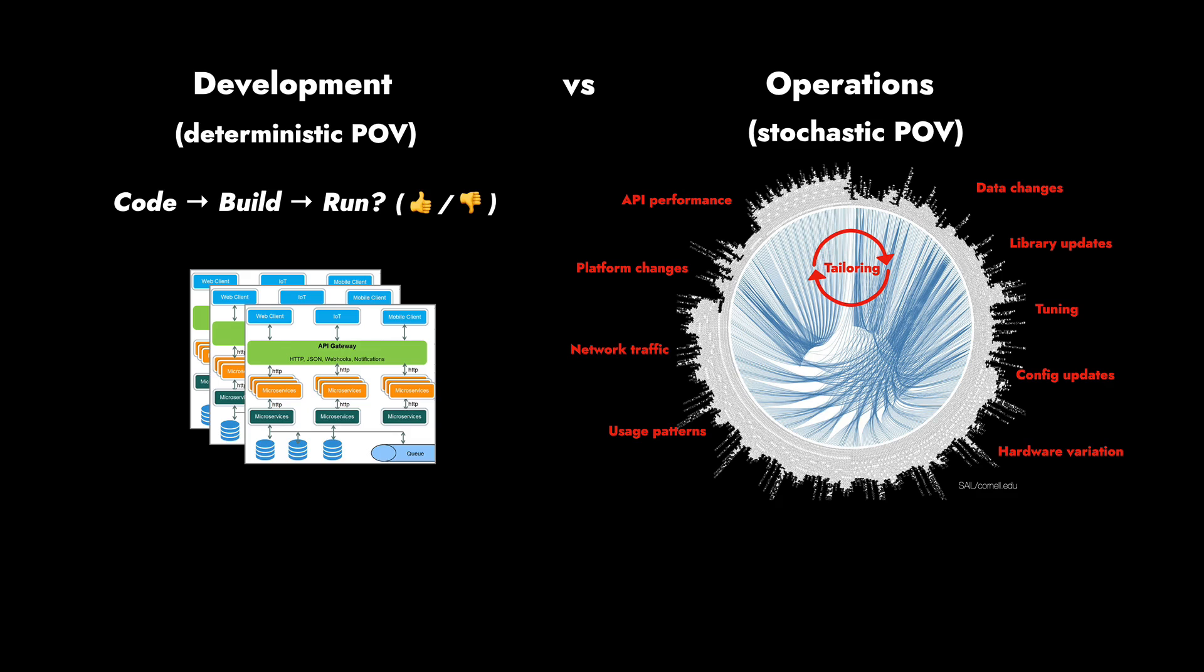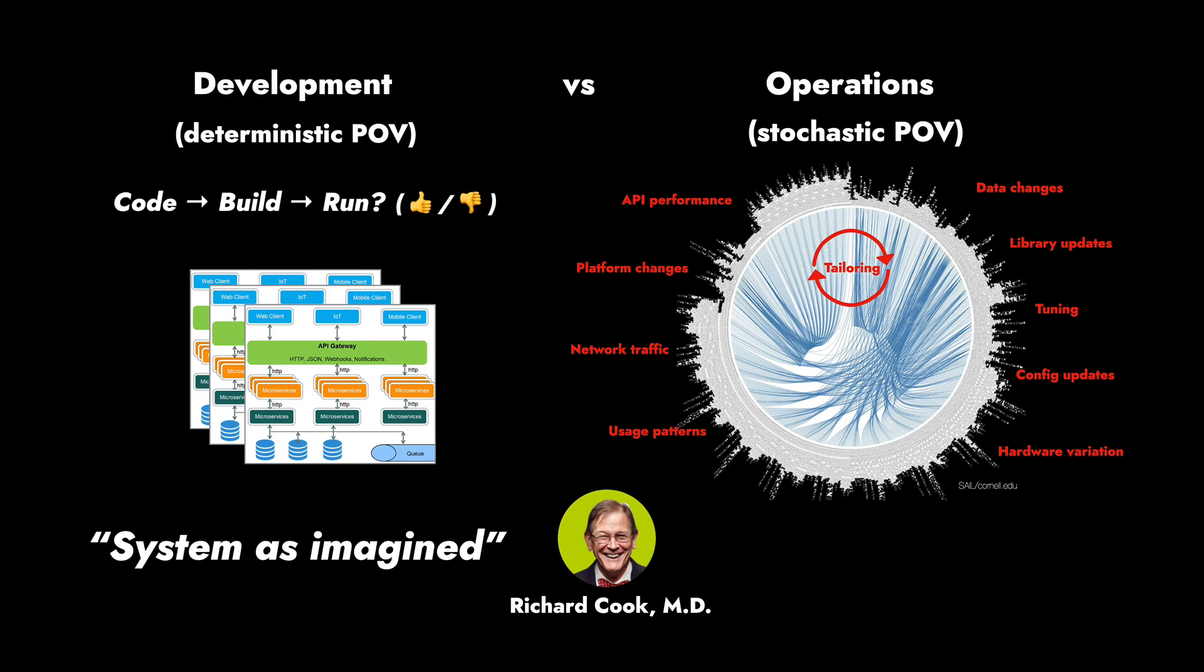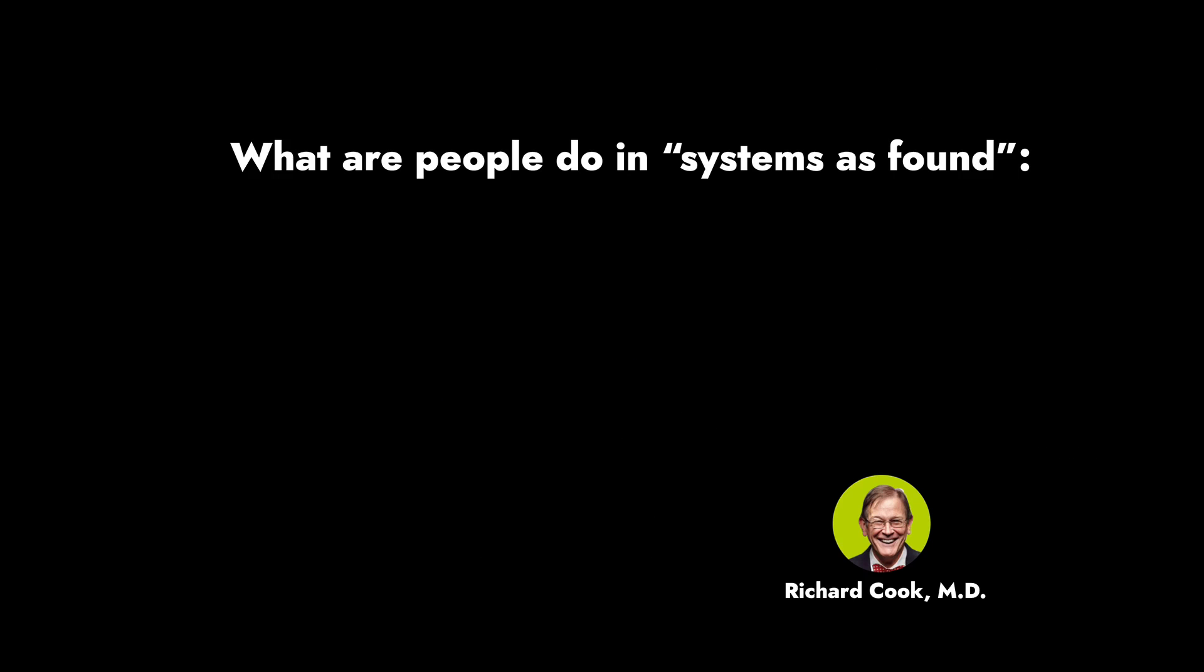Unlike thinking we can predict our outcomes if we fix the inputs, this is a new, more stochastic view of things—that's the nature of operations. Dr. Richard Cook, one of the giants in the safety sciences field from outside of technology, is an anesthesiologist who studies high-consequence domains. He's one of the foremost researchers and accident investigators in the world. He likes to call this on the left 'the system as imagined'—what we hold in our head, this deterministic view—versus 'the system as found,' which is our production systems, this much more random and unpredictable world we're working in. He likes to point out: what do people do? What's the role of humans in these systems as found?